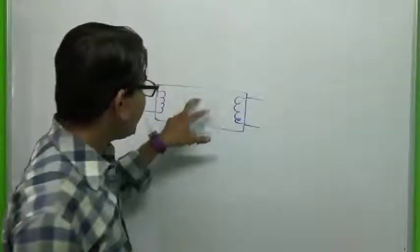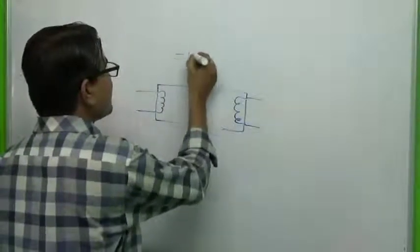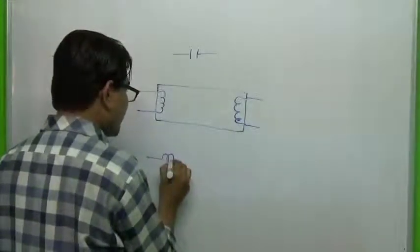So this is our fluorescent tube. We also employ a starter and we use a choke.